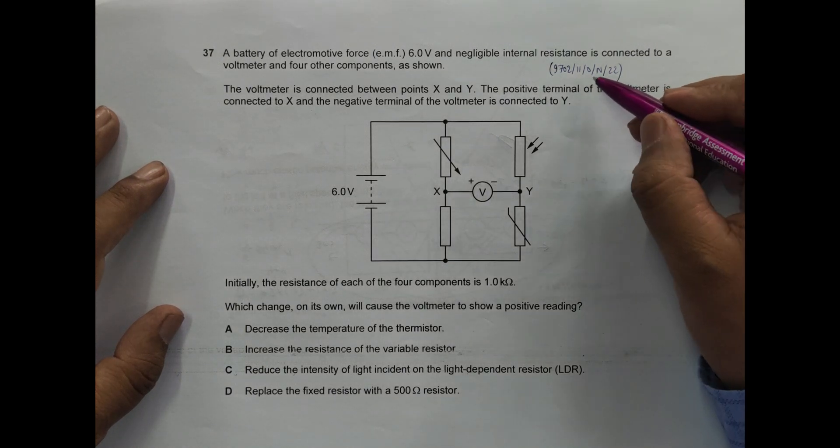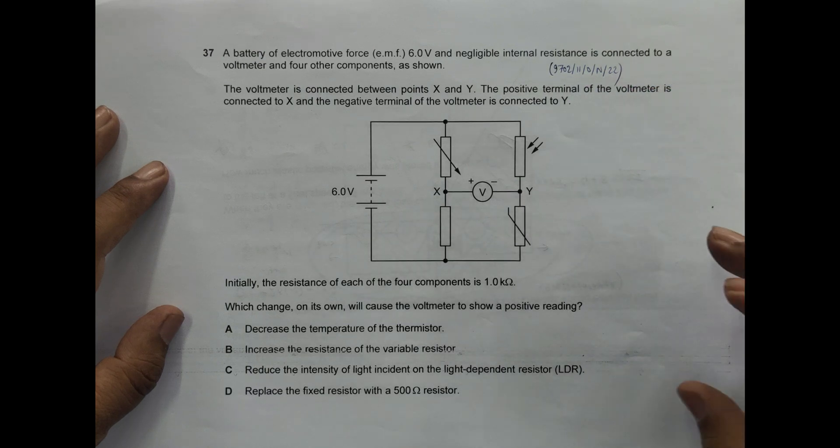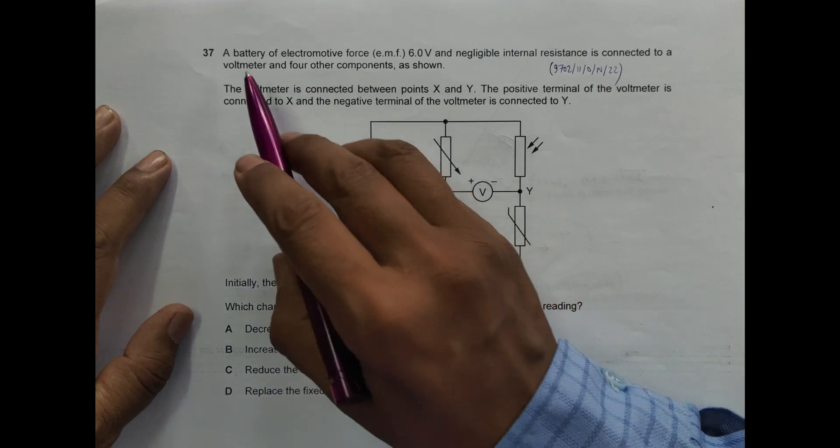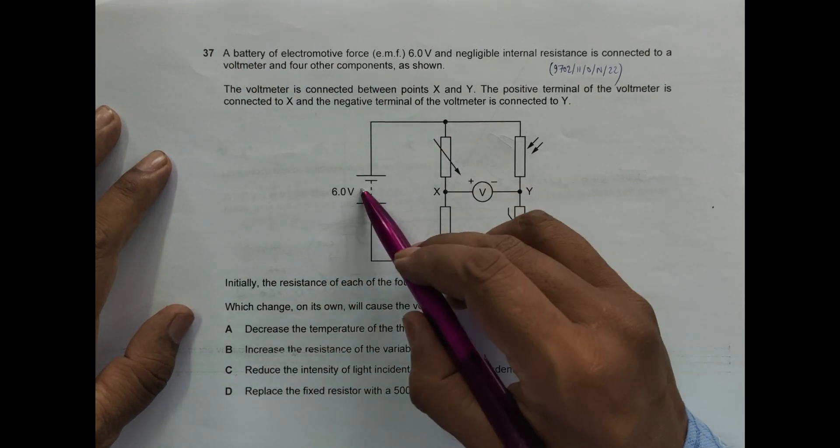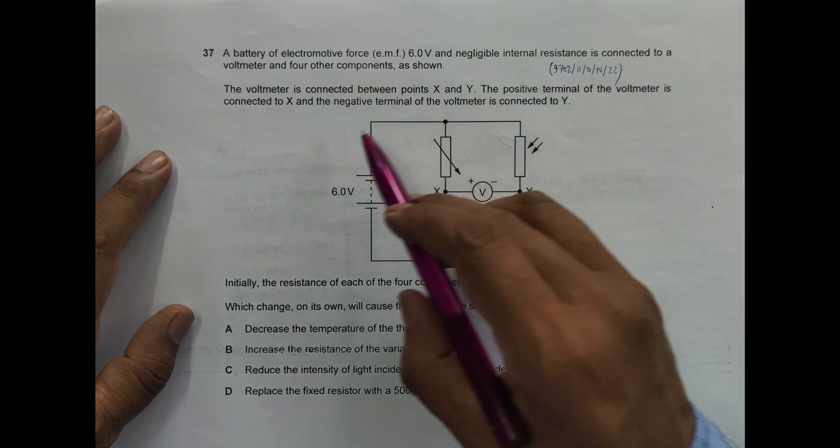Hello folks, this is 2022 October-November paper 11, question number 37. It is concerned with the chapter current electricity. It says a battery of electromotive force 6 volts with negligible internal resistance is connected to a voltmeter and four other components as shown.